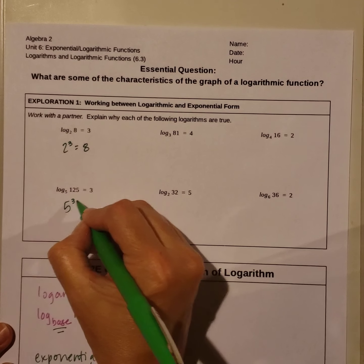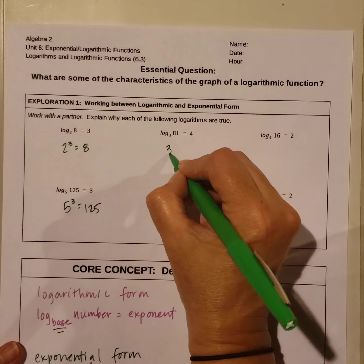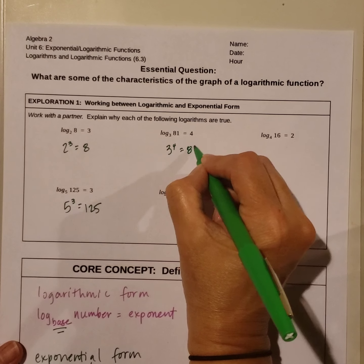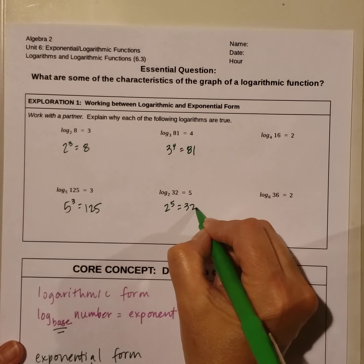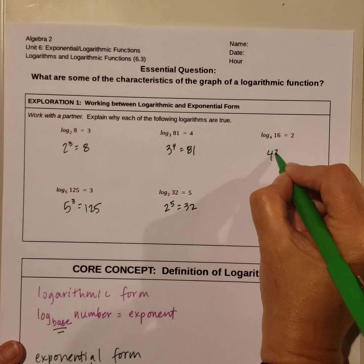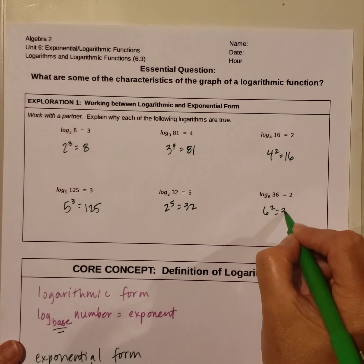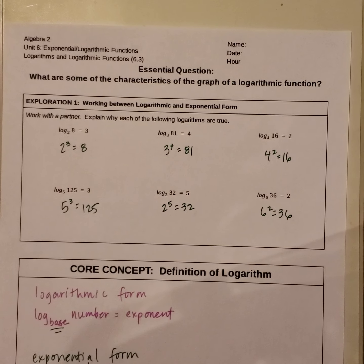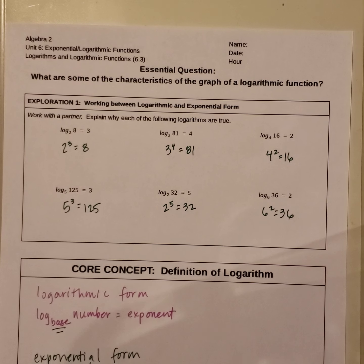5 to the 3rd equals 125. 3 to the 4th equals 81. 2 to the 5th equals 32. 4 squared equals 16, and 6 squared equals 36. Using logs or logarithms is another way of expressing exponents, so we can move back and forth between the two forms.